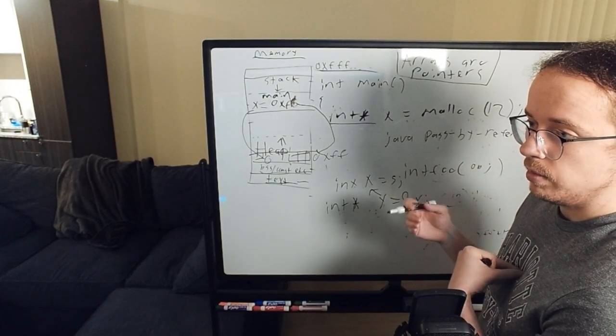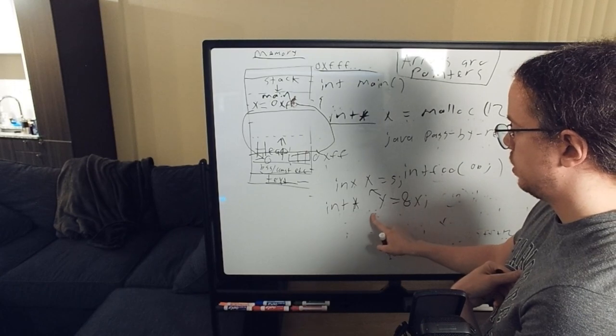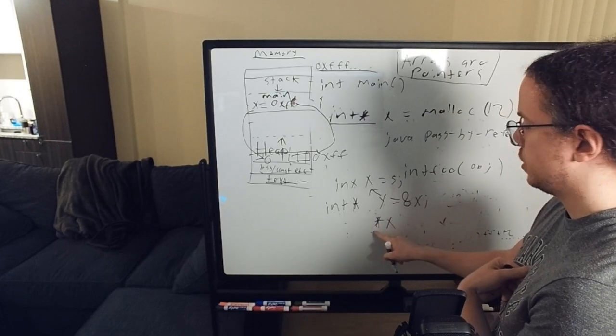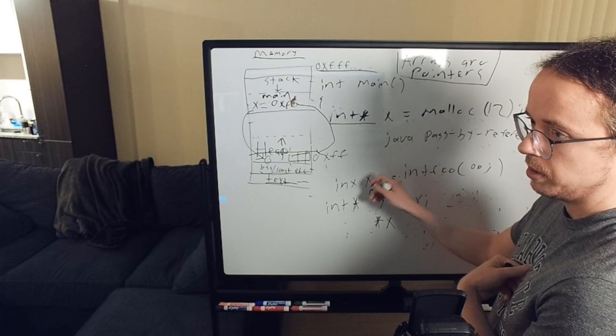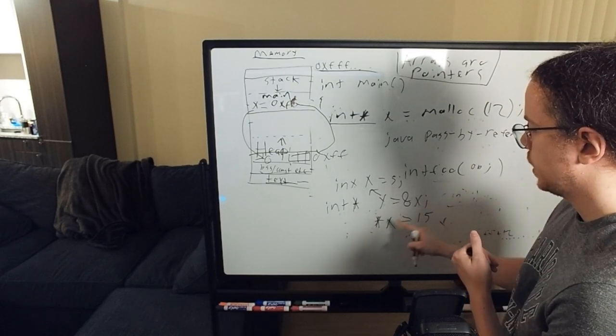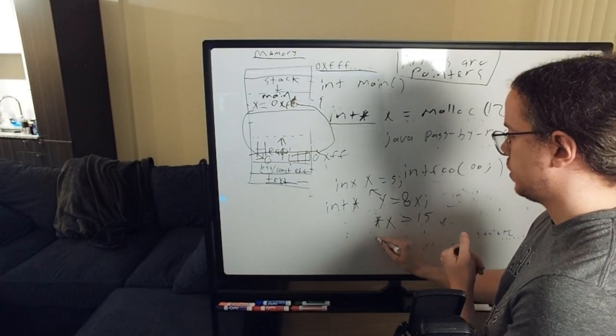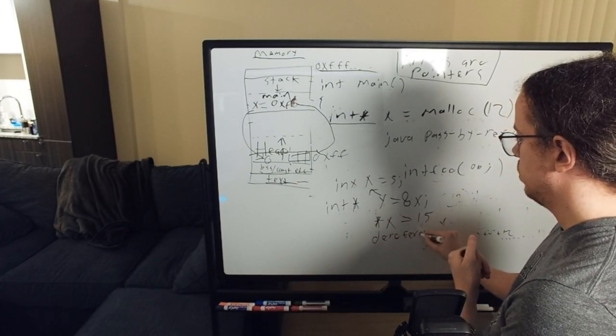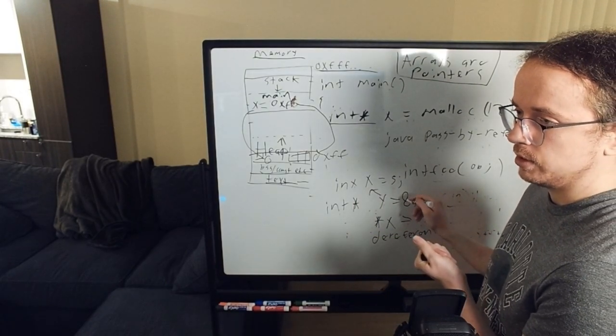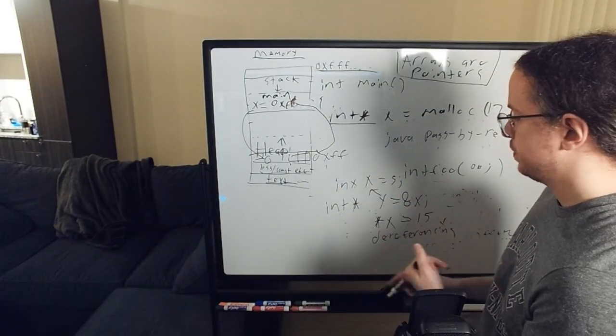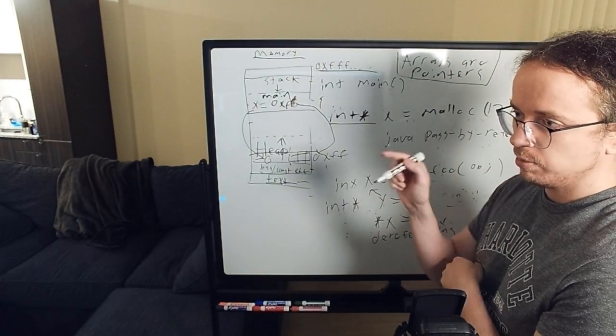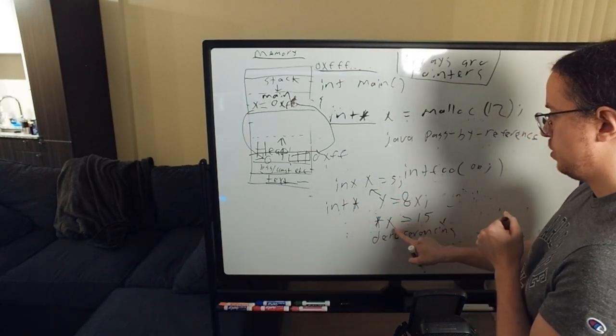So a technique we can use, something we can do is say star x. So notice this is different. This is a little different than how we use star up here. This isn't a declaration. We could say star x equals 15. In this case, the star is the dereferencing operator. So we have the address of operator, which is the ampersand. It takes the address of some variable. And then we have the star, which is dereferencing. It's saying, give me the value of whatever this y points to.